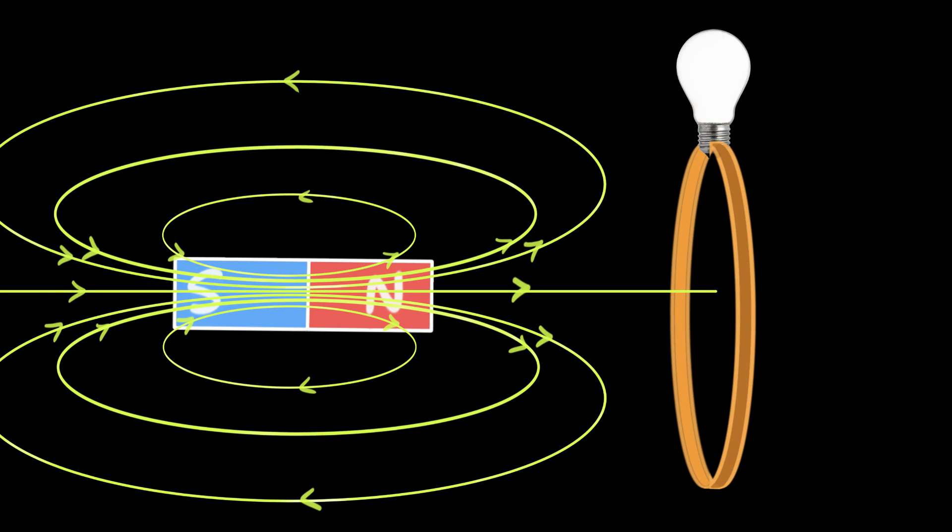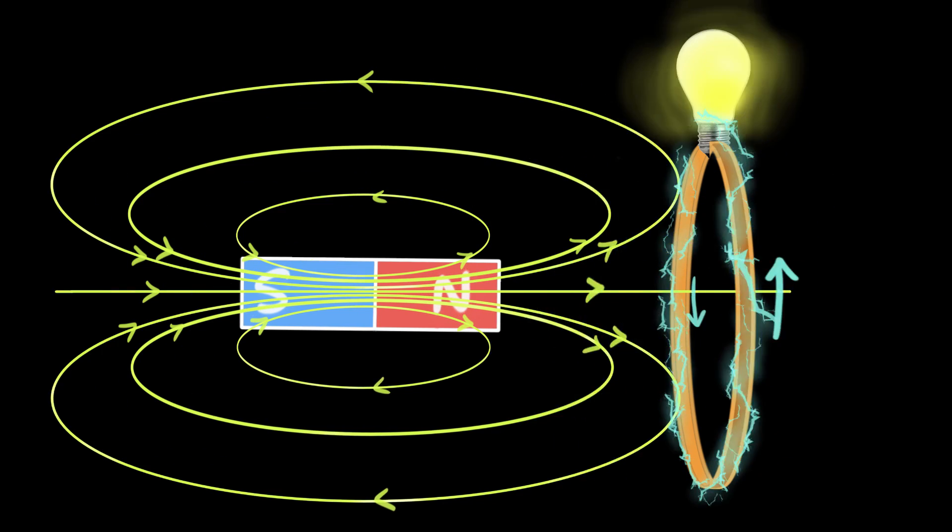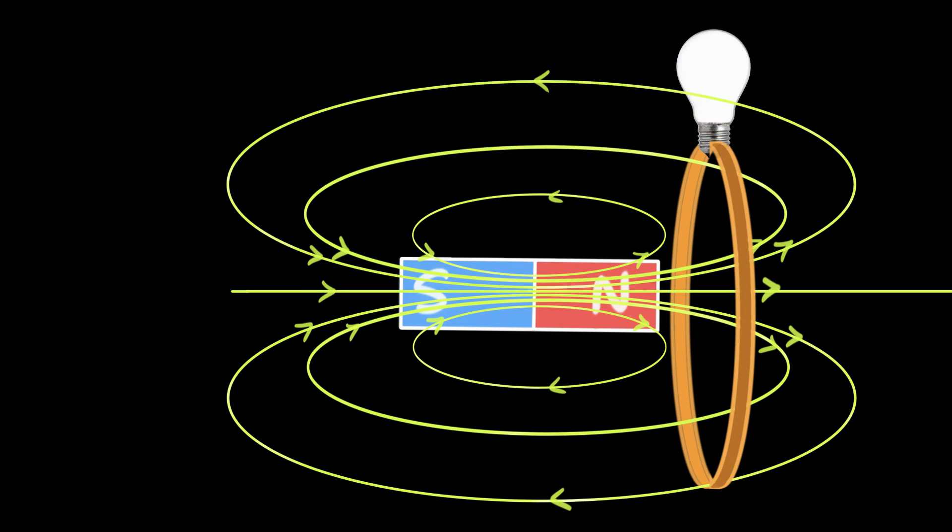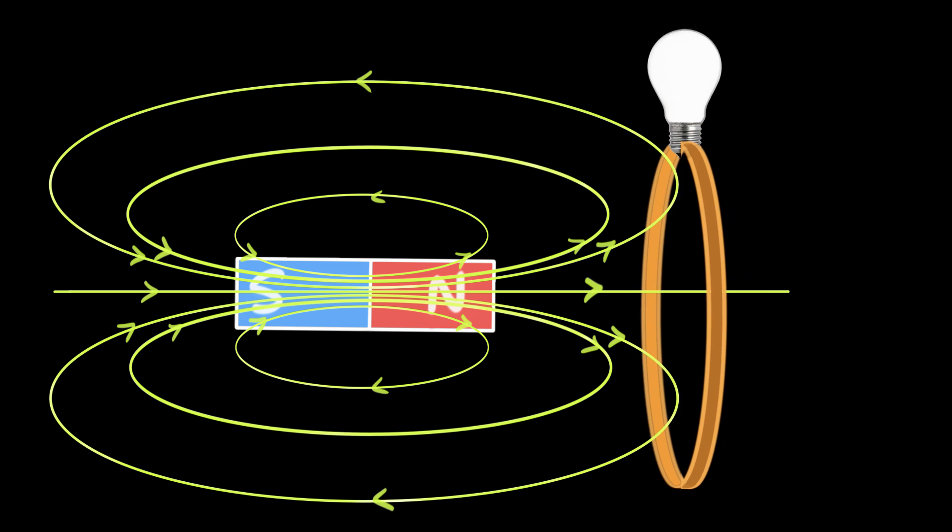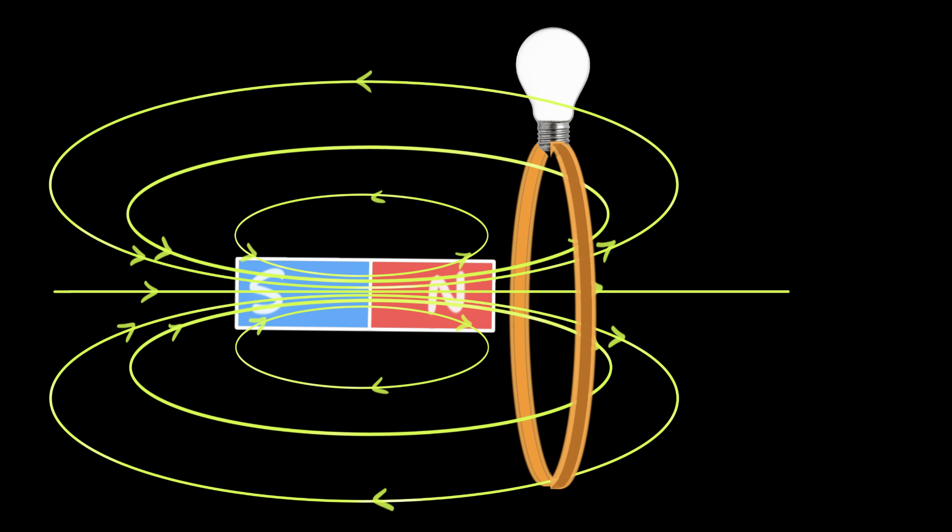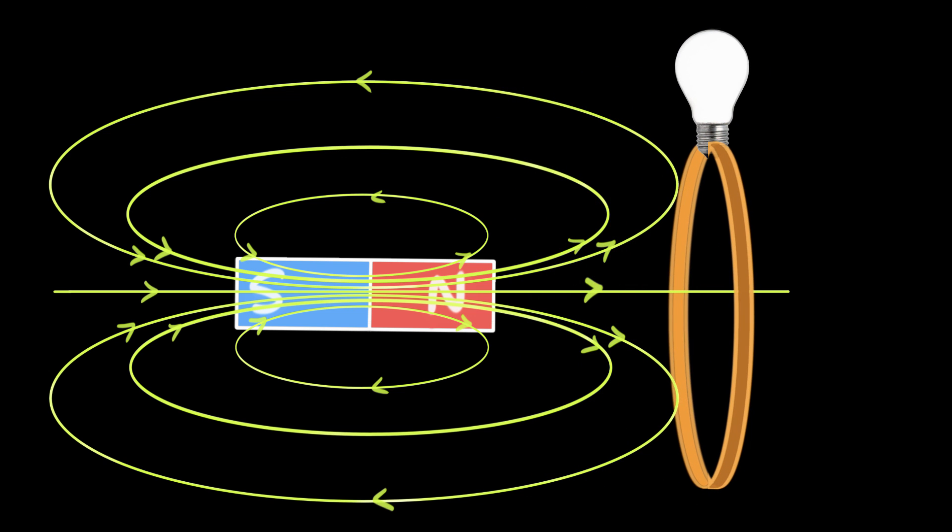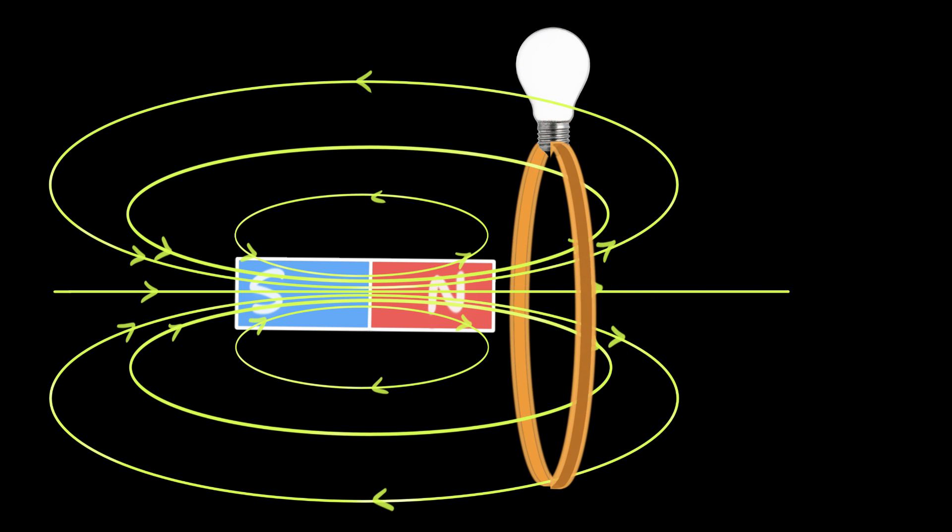One way of doing this would be to move a bar magnet towards and away from a coil. Or you can hold the magnet stationary and move the coil closer and farther away from the magnet. Turns out that moving the coil is a little bit more convenient.